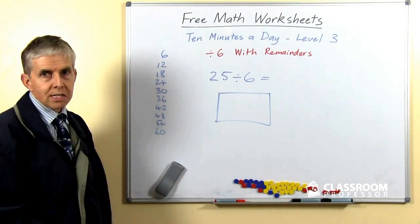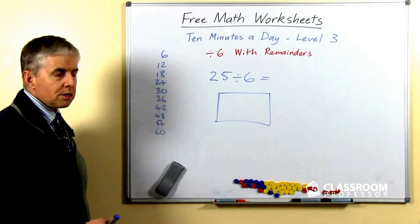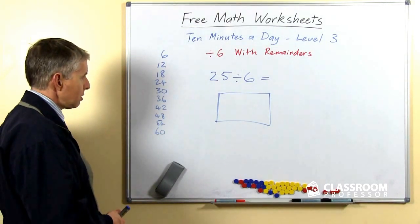And by the way, we can stop at 60 because we don't need to divide by anything other than single digits, so we don't need the 11 and 12 times.